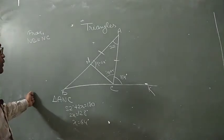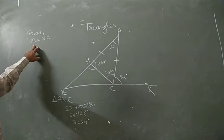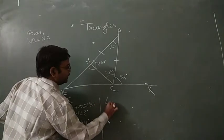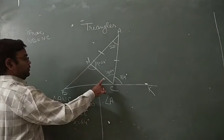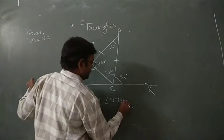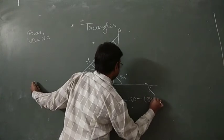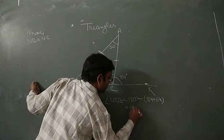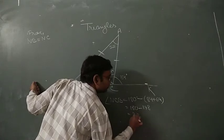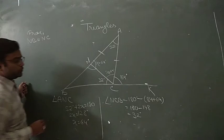Now we find angle NCB. Since BCK is a straight line, angle NCB equals 180 minus (84 plus 64) equals 180 minus 148, which equals 32 degrees.